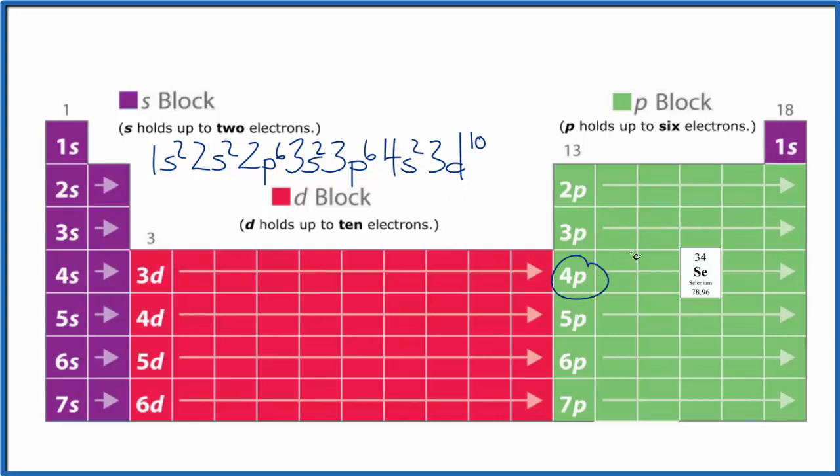4p: 1, 2, 3, and there's selenium. 4p4, and we've used all the electrons. If you count these up, that adds up to 34.